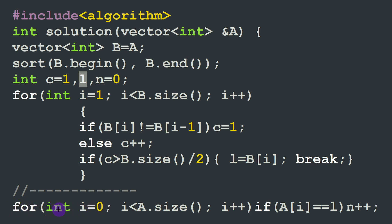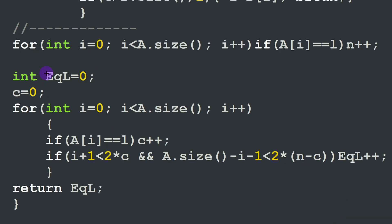Then we count the total occurrences of the leader in vector a, incrementing n for each a[i] equal to l. We define a new integer eql — for equal leaders — initialized to zero, reinitialize c to zero, and loop over all elements of array a. If a[i] equals l, we increment the current counter c. This counter c in each iteration holds the number of leader values seen so far — i.e., the count on the left side of the array.